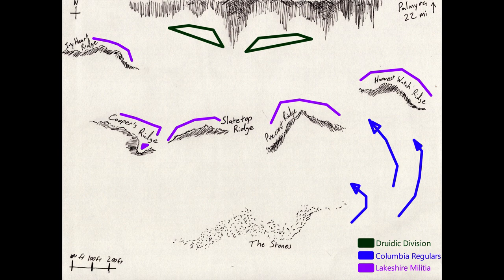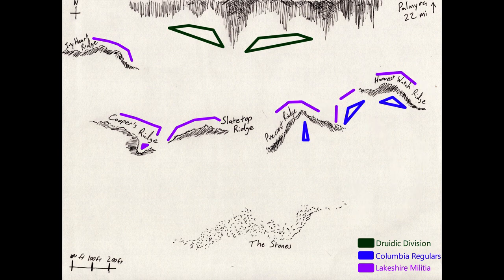Two regiments each approached Harvest Watch Ridge and Pinecrest Ridge with the intention of holding the bodies of troops there in place. The remaining two regiments intended to try and slip through between the two ridges and hopefully outflank the troops on Pinecrest Ridge. With a breach in the line thus effected, the plan was to continue flanking around the east side and sweep up Harvest Watch Ridge as well. Basically, none of this went as planned.